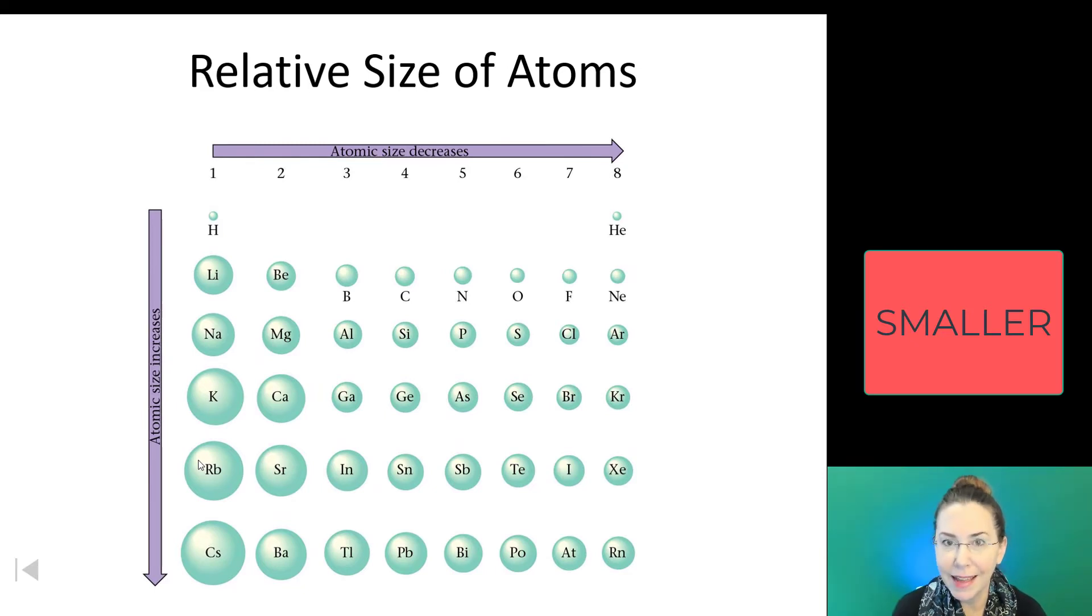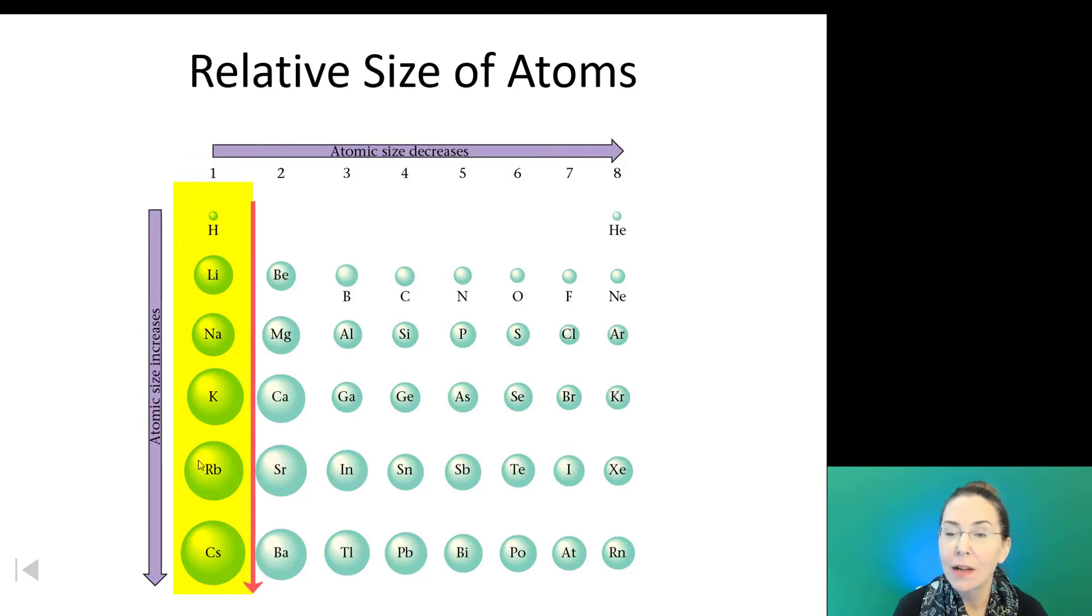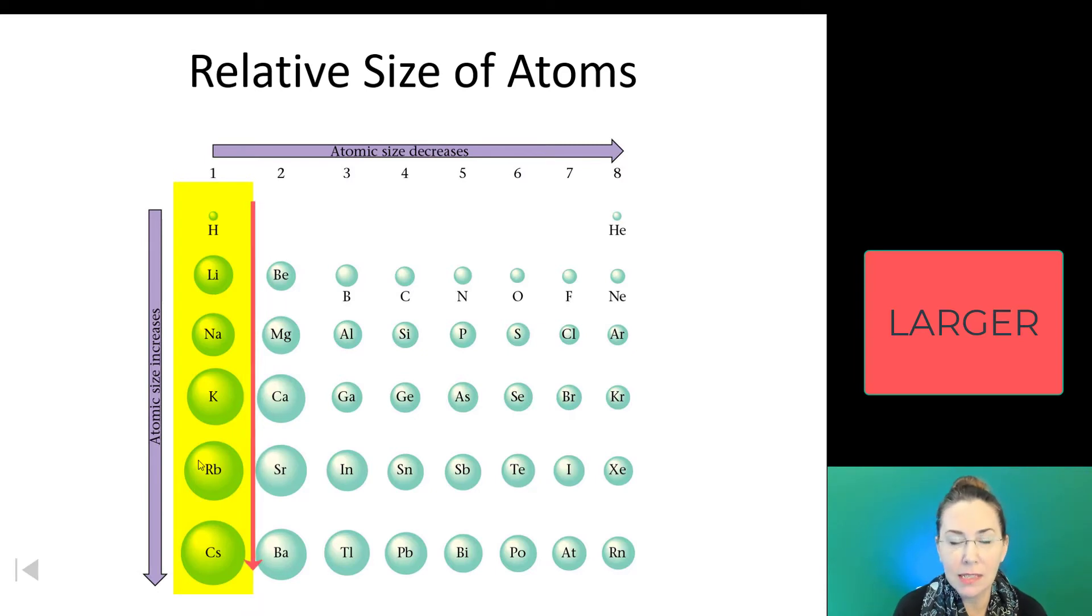We're going to get to that in just a moment. As we go down the periodic table, our elements are becoming larger. Atomic size is increasing, which makes a lot of sense because as we go down, remember, in each period, we are adding shells, which as we're adding those layers, it makes sense that those atoms are going to become larger. But then why are they becoming smaller as we go across? We're adding electrons. Why are they getting smaller?